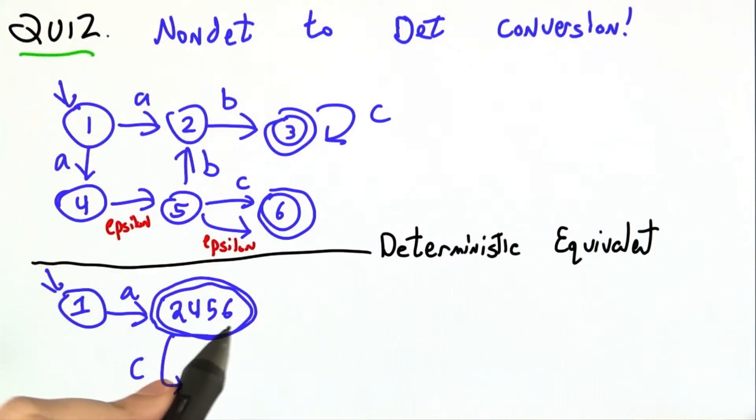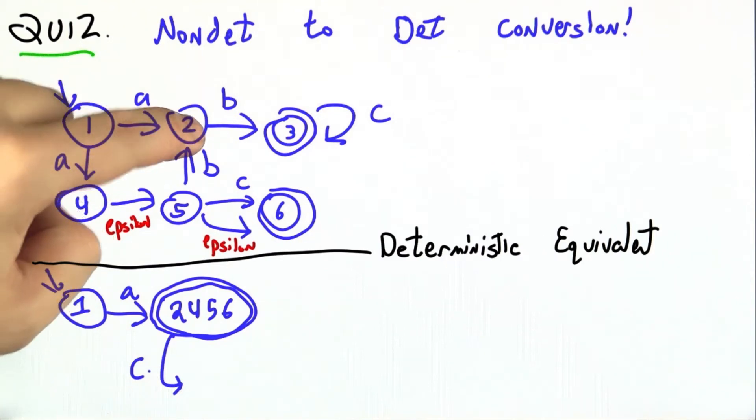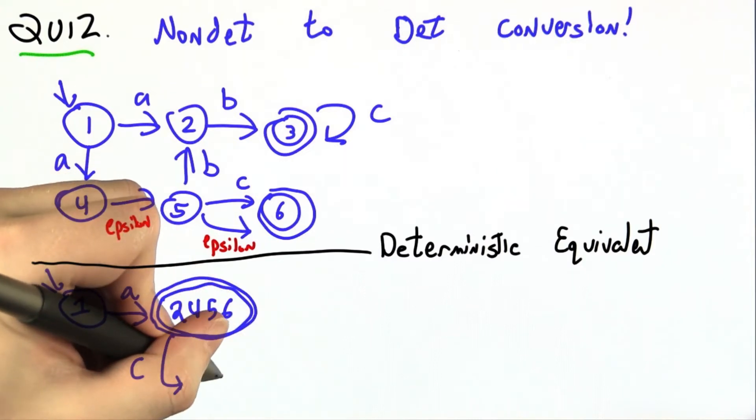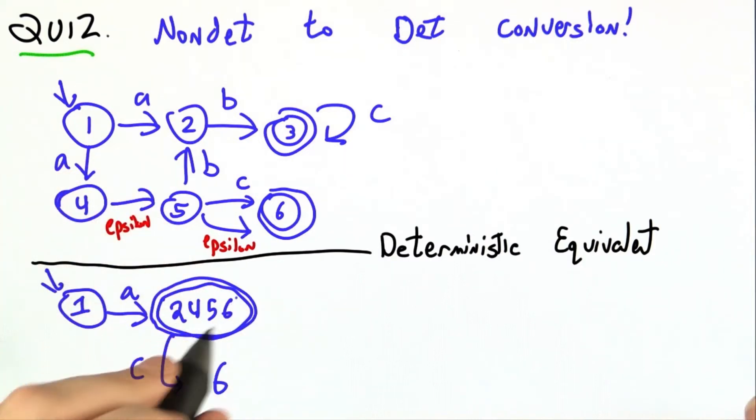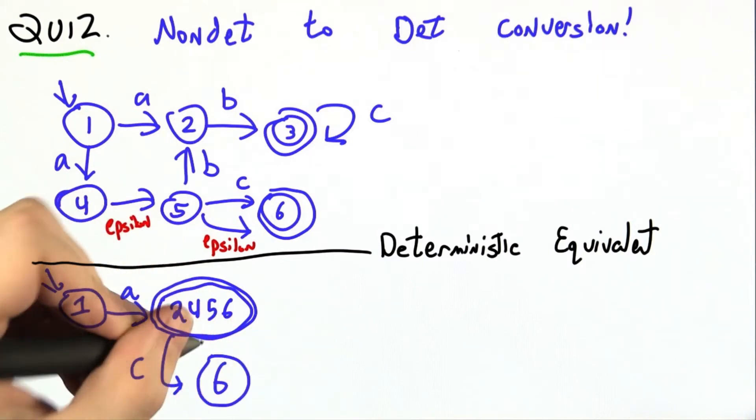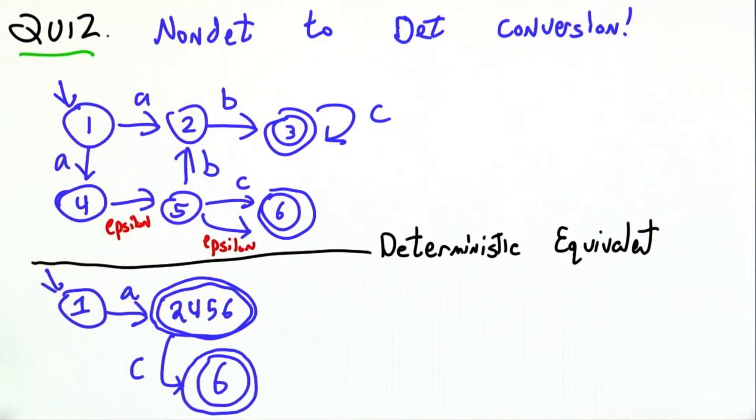Let's say that I'm in either 2, 4, 5, or 6, and I see a C. If I'm in 2 and I see a C, I fall off the world. If I'm in 4, fall off the world. 5, I go to 6, looking good. 6, fall off the world. So here, if I was in 2, 4, 5, or 6, and I see a C, I end up just in state 6, and that's definitely an accepting state.